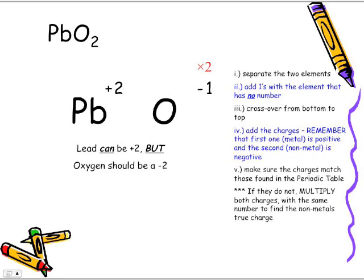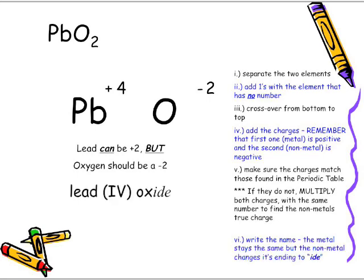We're going to multiply that by two. But remember, any time we multiply one thing by something, we need to do that same for the other. So we're going to multiply both of them by two, and the charges become plus four and negative two. So in terms of naming it, we're going to write the name.